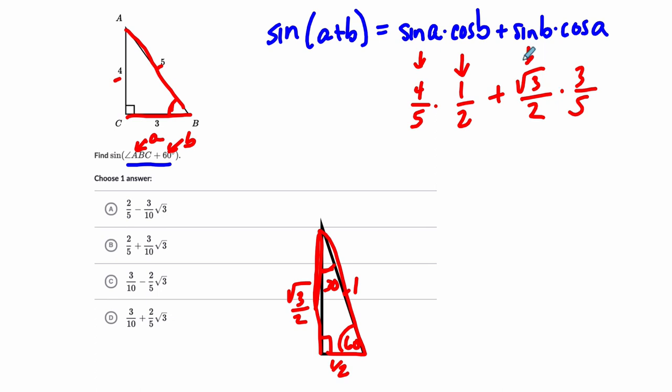And then we're just going to simplify it. So here we have 4 tenths, which reduces to 2 fifths in the first term, and then we have plus 3 radical 3 over 10. And they just write it slightly differently here. They pull the radical term outside, or at least to the left of the fraction, and make that fraction term the coefficient.